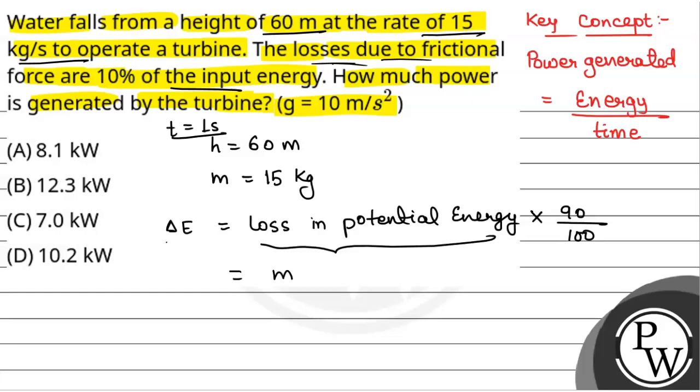So that will be MGH. If we are taking up to 1 second, it will be 15 kg times G, and G is 10 meters per second squared, and H is 60 meters, times 90%, so 90 by 100, because 10% energy is lost due to frictional forces and input energy is loss in potential energy. So this will be equal to 8100 joules, which is equal to 8.1 kilojoules.